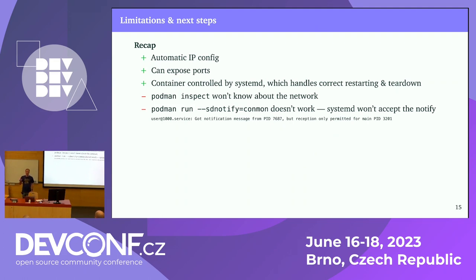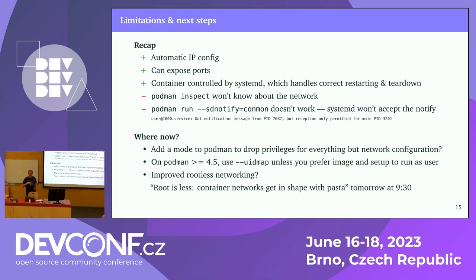So what did we achieve? We now have automatic IP configuration — even though I had to reimplement it, the script does it for you. We can expose ports. With the systemd service file, the container can be controlled by systemd for correct startup and teardown. However, 'podman inspect' still won't know about this network because we added it manually, and systemd notifications won't work in this configuration because systemd will see but refuse the notify.